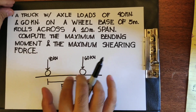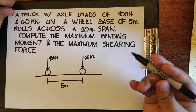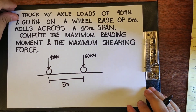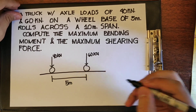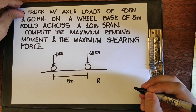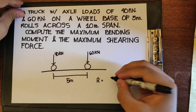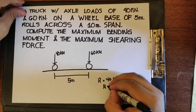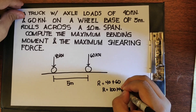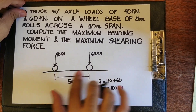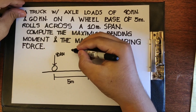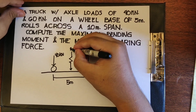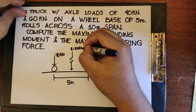In this figure, we have a 40 kN and 60 kN load. The first step is to get the resultant force. To get the resultant force, we just add the two axle loads: 40 plus 60 gives us 100 kN. The resultant force acts on the centroid of the axle loads' span, so we can assume it acts at the centroid — this is 100 kN.